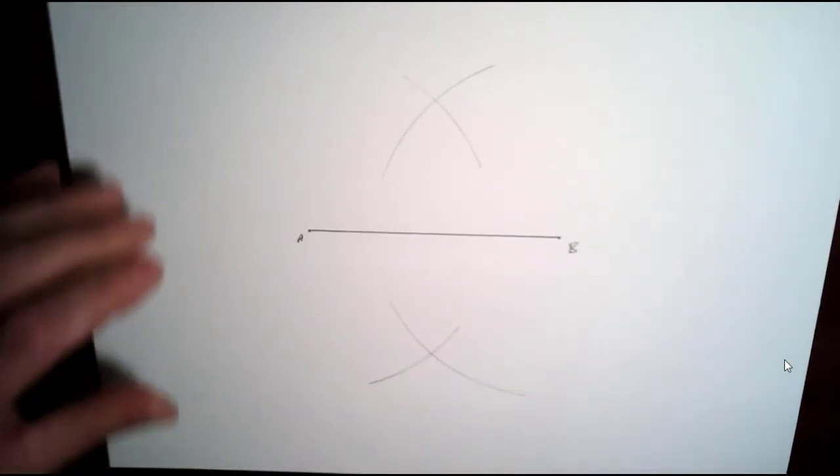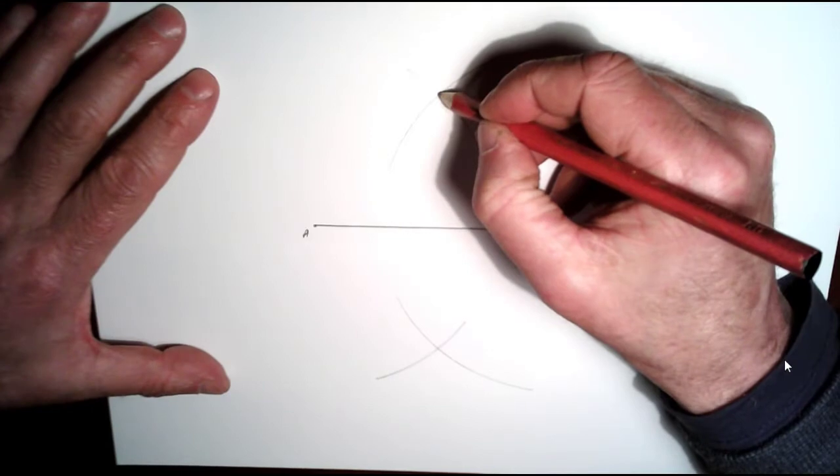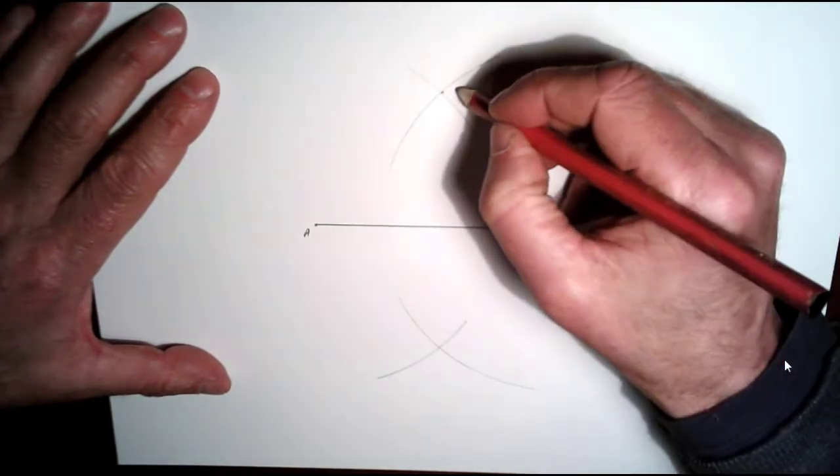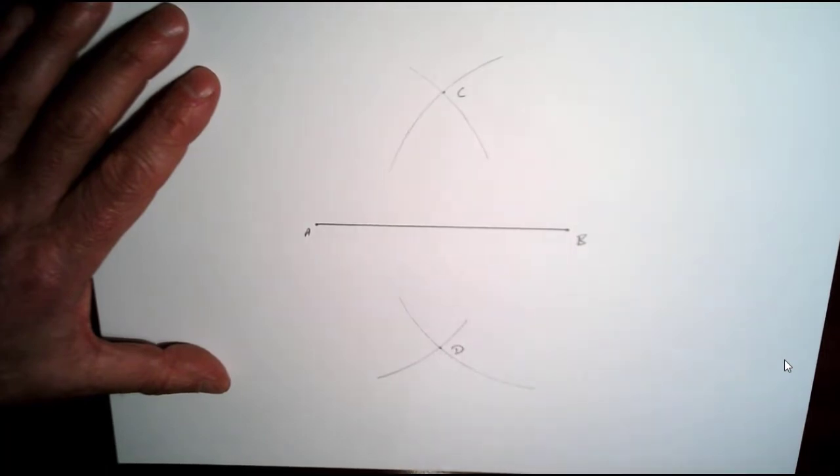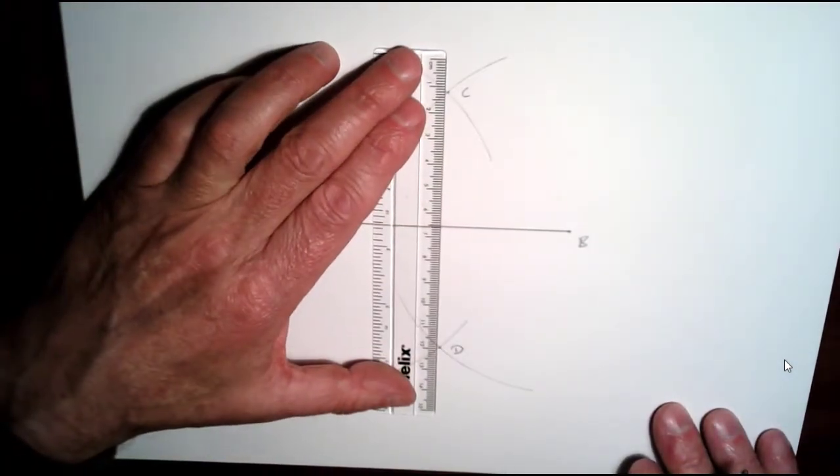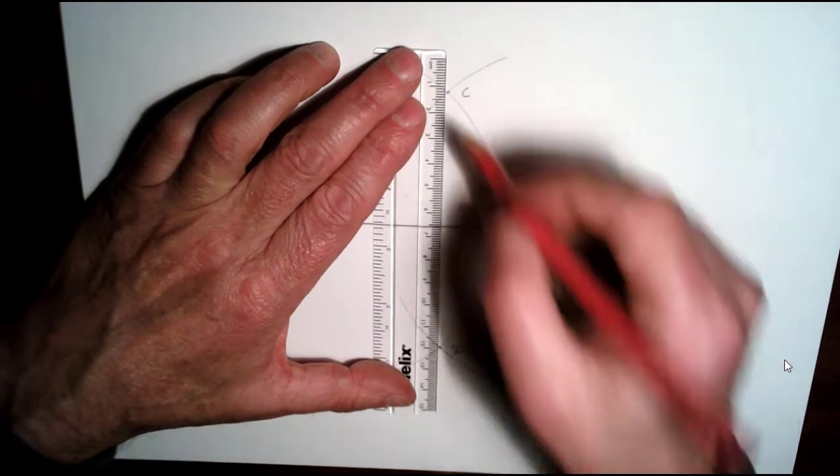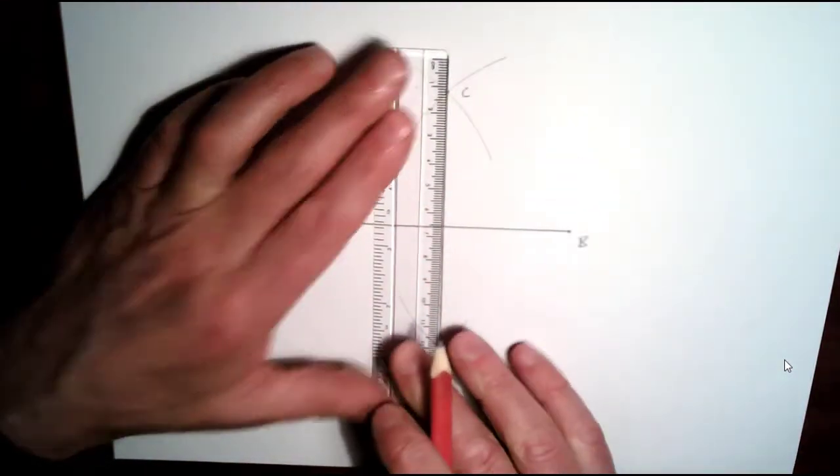And where the two arcs meet just put in a little point there, so we'll call this one say C, call this one here D, and what you're going to do is just connect up those points. So draw a line straight down there like that.